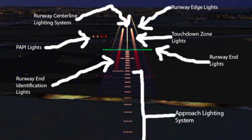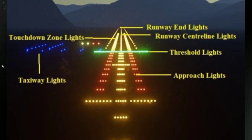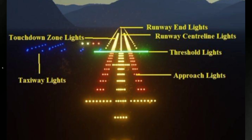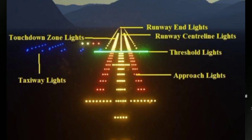Situational awareness: centerline lights contribute to pilots' situational awareness, helping them stay oriented with the runway environment and surroundings, even in adverse weather or nighttime conditions. Visual cues: the lights act as visual cues for pilots, complementing other navigational aids and instruments, to ensure they maintain the desired alignment on the runway centerline. Reduced pilot workload: by providing clear visual guidance, centerline lights reduce the cognitive workload on pilots during takeoff and landing, allowing them to focus on other critical aspects of flight.